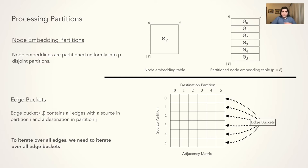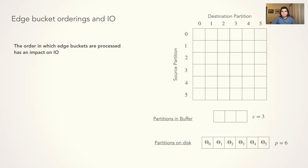To train one epoch, we must iterate over all edges and therefore all edge buckets. The order in which these edge buckets are processed has a large impact on the amount of I/O performed during training. As every time we perform a swap, we will have to read and write many gigabytes. Therefore, we want to have as few swaps as possible.